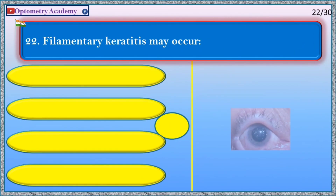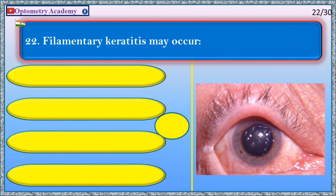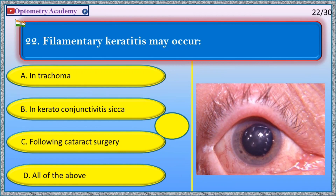Filamentary keratitis is seen in: A. In trachoma, B. In keratoconjunctivitis sicca, C. Following cataract surgery, D. All of the above.